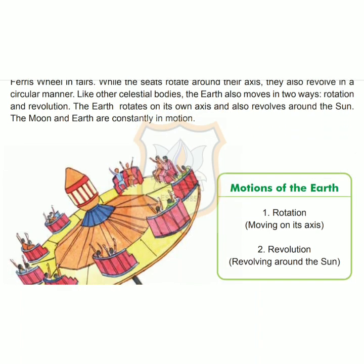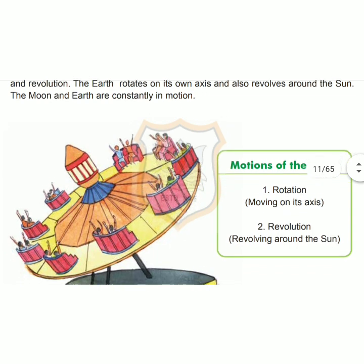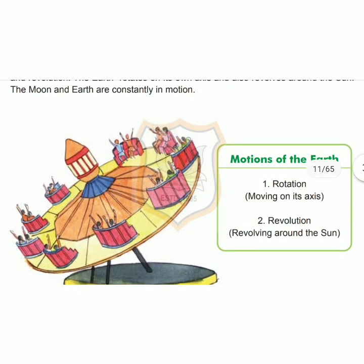Now let me explain you the topic motions of the earth. Like all the other moving elements of the universe, the earth also moves in two ways. One, it rotates on its own axis, and second, it also revolves around the sun. Thus the motion of the earth takes place in two ways. However, it is not only the earth that moves — all the elements of the universe perform motion.